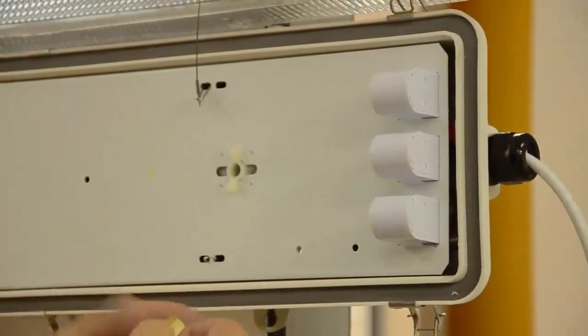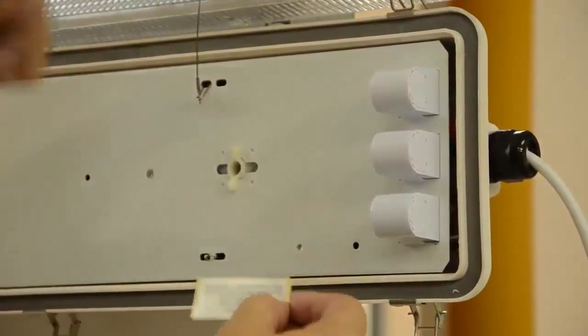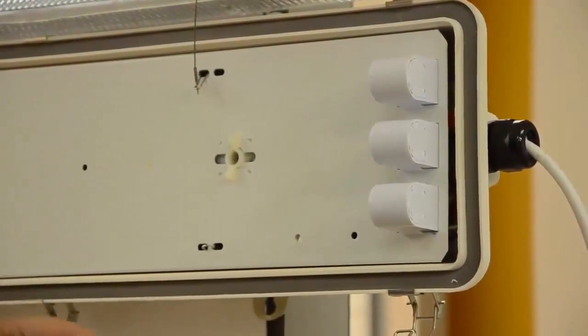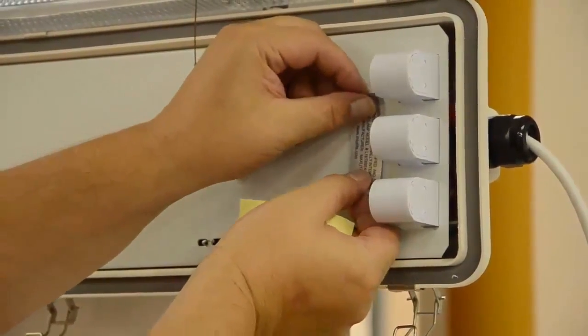Now before we put in our LED T8 lamps, I'm going to apply this label. This label is going to warn the next guy down the road 15, 20 years from now that when he does maintenance on this fixture that there is direct line voltage on these sockets.